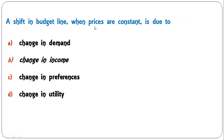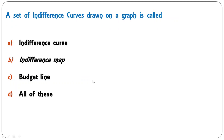Next: 'A shift in the budget line when prices are constant is due to' — change in demand, change in income, change in preferences, or change in utility? The budget line shifts right or left depending on change in income. If income increases, the budget line shifts to the right; if income decreases, it shifts to the left. B is the correct answer. 'A set of indifference curves drawn on a graph is called' — indifference curve, indifference map, budget line, or all of these? It is known as an indifference map.